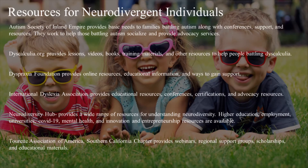There are resources available for neurodivergent individuals. The Autism Society of Inland Empire provides basic needs to families battling autism, along with conferences, support, and resources, and works to help those battling autism socialize and provides advocacy services. Dyscalculia.org provides lessons, videos, books, training materials, and other resources to help people battling dyscalculia.